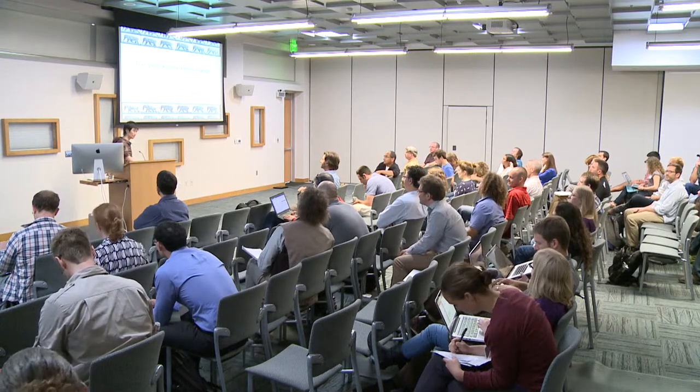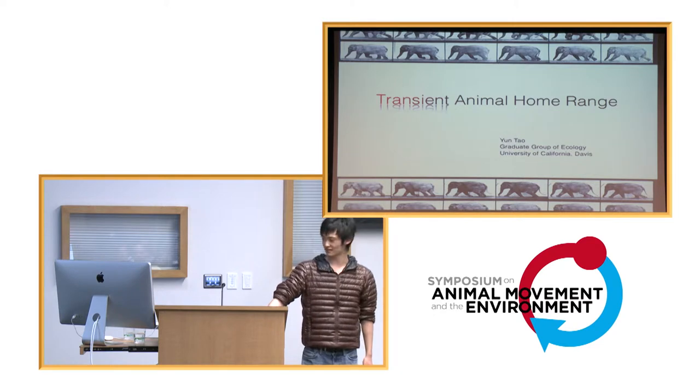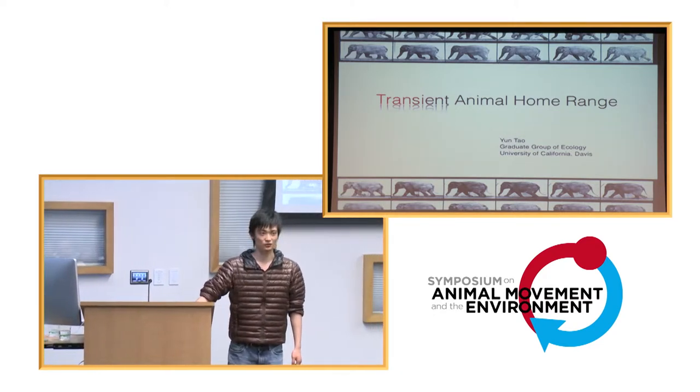Hi, my name is Yurin Tao. I'm a PhD student at UC Davis. I'm a student of Allen Hastings. And today I'm going to talk about Transient Animal Home Range.